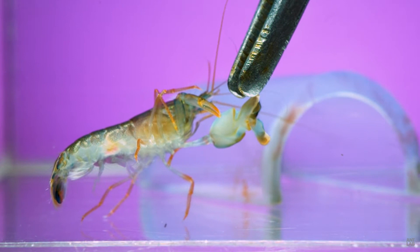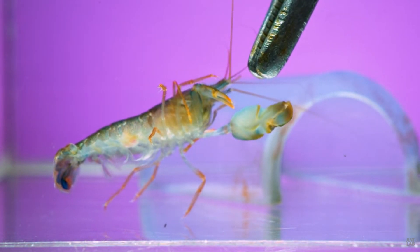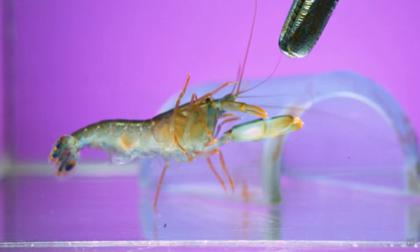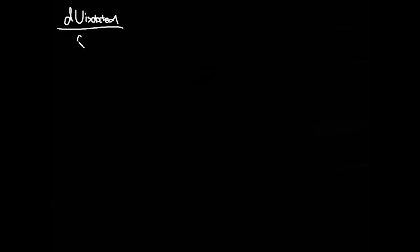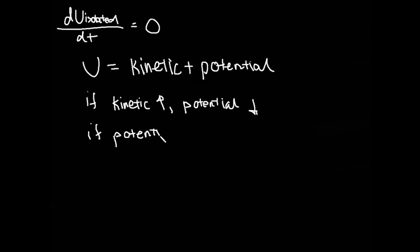Cavitation is the rapid formation and collapse of vapor bubbles within a liquid. This occurs when the static pressure of a liquid becomes smaller than its vapor pressure. This can be most easily understood in terms of potential and kinetic energy — because energy is neither created nor destroyed, a change in either form must be compensated for by changing the other form. In the case of the pistol shrimp, the claws increase the kinetic energy of water by shooting water at high velocity.